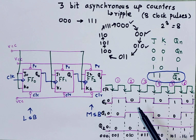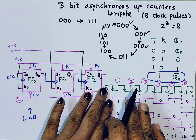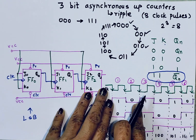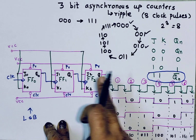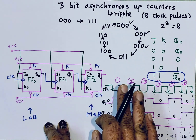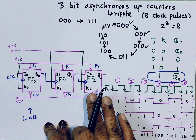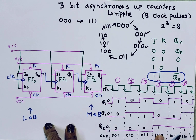In this way, the asynchronous counter works. You need to remember that asynchronous counters are the simplest to implement, but all flip-flops do not generate output simultaneously, making them slower due to propagation delay. As the number of flip-flops increases, propagation delays also increase. That is why they are used in digital clocks or simple counters only. I hope you liked this video — please like, share, and subscribe to my channel. Thank you so much for watching.